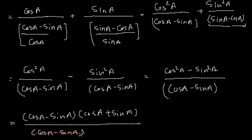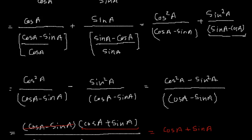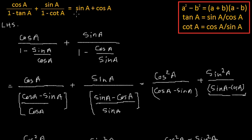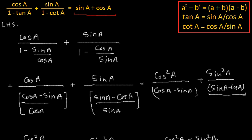The cos A minus sin A cancels, and the result is cos A plus sin A, which is exactly the right-hand side of this problem. So we have proved the equality: cos A divided by 1 minus tan A, plus sin A divided by 1 minus cot A, equals sin A plus cos A. That's all for this problem. We are going to solve a few more problems — I wanted to cover all kinds of problems you come across in school. Keep watching MathSmart, bye-bye till then.